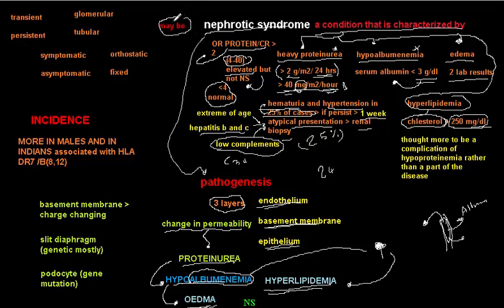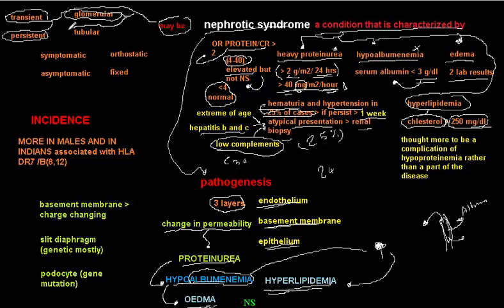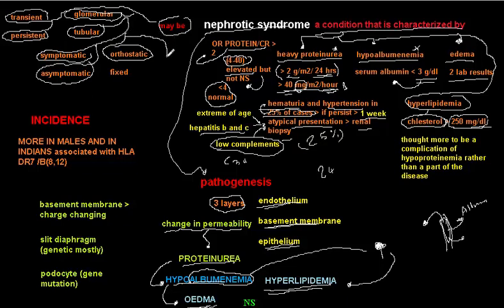Nephrotic syndrome can be classified as transient or persistent; glomerular (due to destruction of the glomerulus) or tubular (due to problems with secretion and absorption in the tubules); symptomatic or asymptomatic; or orthostatic proteinuria — which occurs only when the patient is standing. There is also fixed nephrotic syndrome.